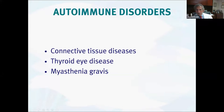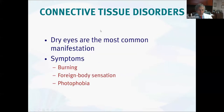A variety of autoimmune disorders can affect the eye — connective tissue diseases, thyroid, myasthenia, GCA. By far the most common manifestation of all of these are dry eyes, with symptoms including burning, foreign body sensation, and photophobia. I'll talk more about dry eye a little bit later.